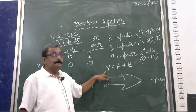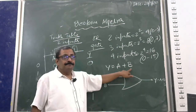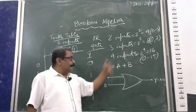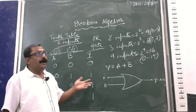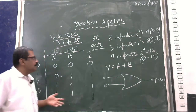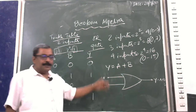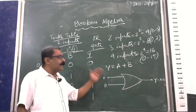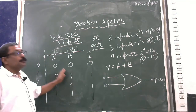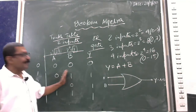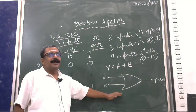We have to write Y = A + B. All three things can be asked in one question: draw the truth table, write the expression, and draw the circuit diagram of the OR gate. That gives the table, the expression, and the circuit diagram.